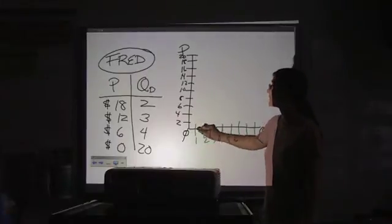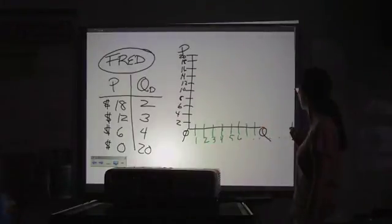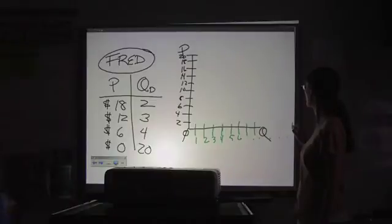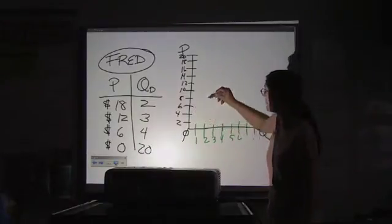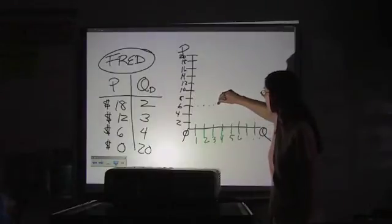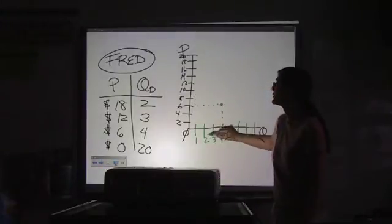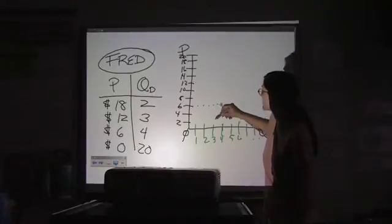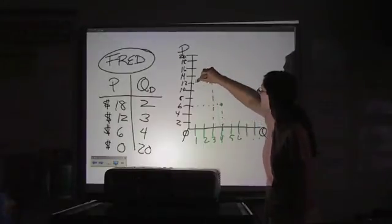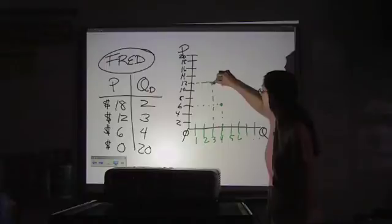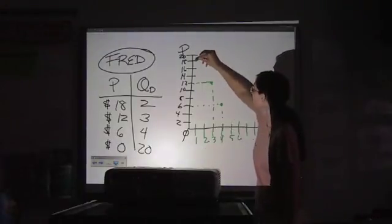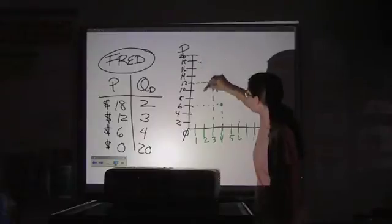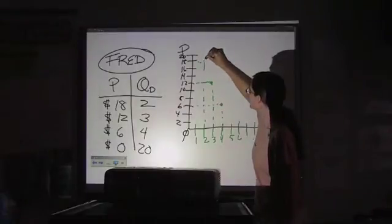So, if the price was 0, he'd want 20. If the price is $6, he would want 4, so we have a point at 6 and 4. If the price is $12, he's only going to want 3, so we have a point at 12 and 3. And if the price is $18, he's going to buy 2, so we have a point at 18 and 2.